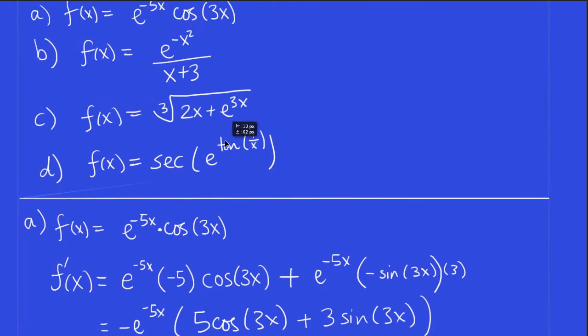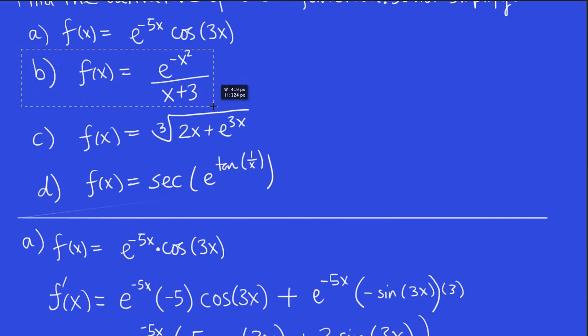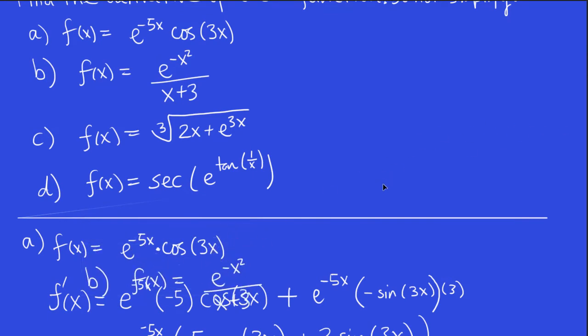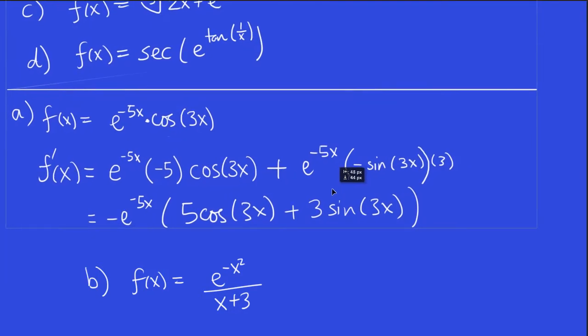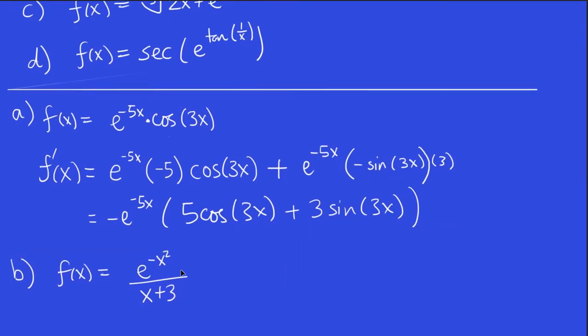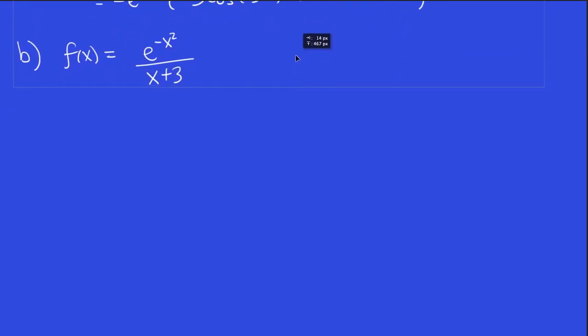Let's get B here. What is it going to look like? To do B, we're going to have to use the quotient rule, right? So let's do it. The derivative of the top, the numerator, is e to the minus x squared times the derivative of negative x squared, which is minus 2x. And then we multiply by the denominator left alone.